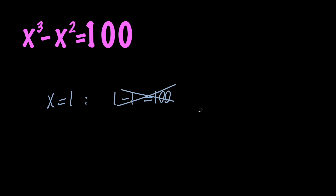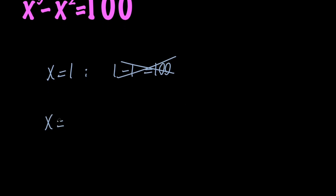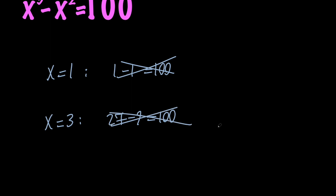So let's go ahead and increase x values. Let's replace x with 3. So we're going to get 27 minus 9 equals 100, which is again something false. But if you look at the left hand side of the equations, the left hand side of the second equation is much closer to 100 comparing to the first equation.